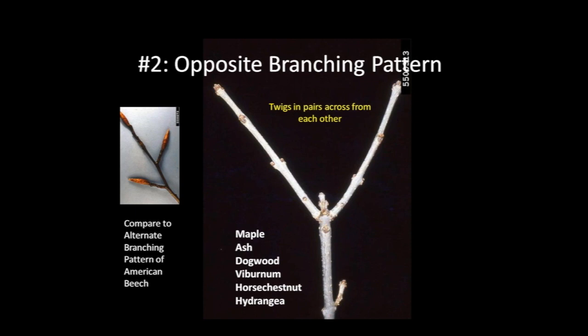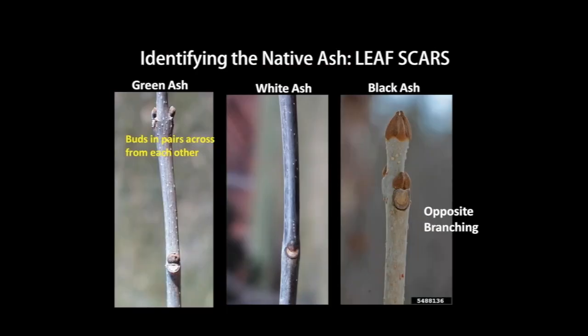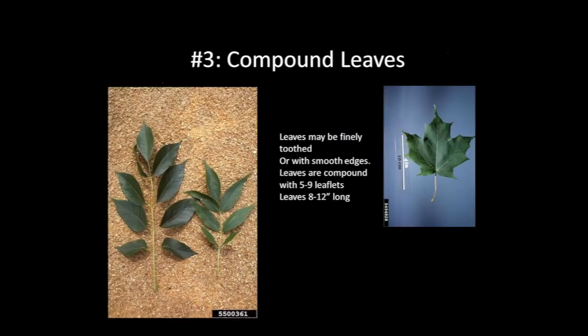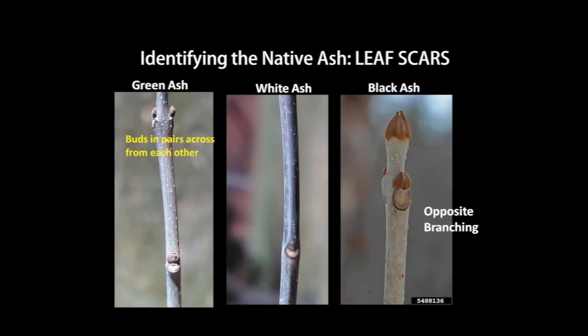Once spring comes, the leaves of the ash tree are called compound leaves. Looking at the twigs, the leaf scars look like letters of the alphabet. The green ash looks like the letter D, the white ash the letter C or a smile, and the black ash resembles an O.